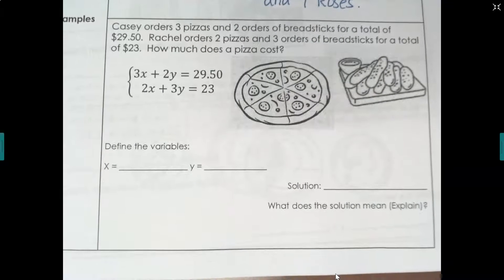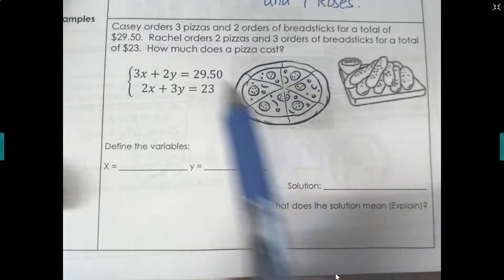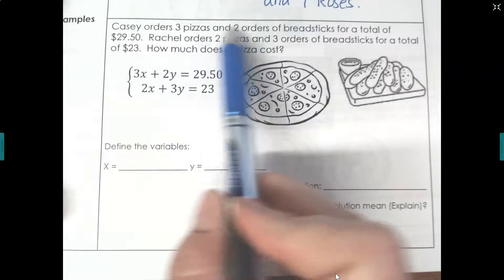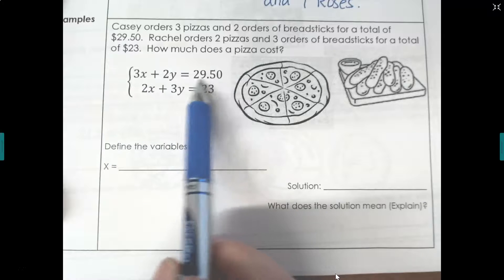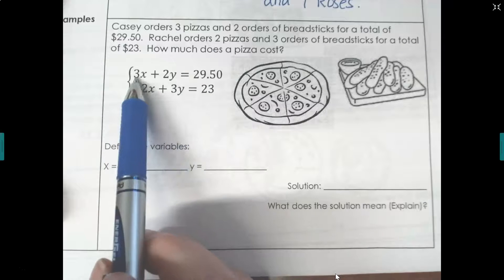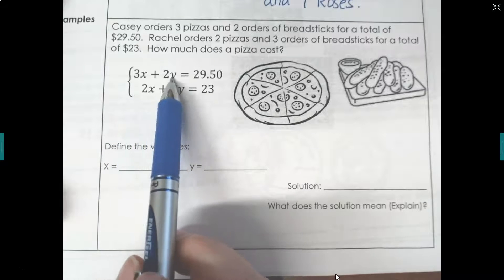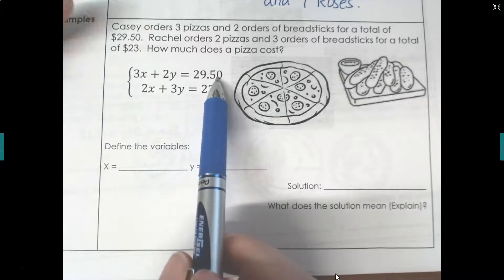Here's our second example. Casey orders three pizzas and two orders of bread sticks for a total of $29.50. Rachel orders two pizzas and three orders of bread sticks for a total of $23. How much does each pizza cost? Well, let's take a look. So this says we have three pizzas and two breadsticks for $29.50. So here's the $29.50. So we're talking about three pizzas plus two breadsticks equals $29.50.